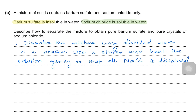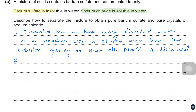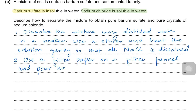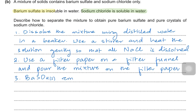During this time you will notice that barium sulfate is not going to dissolve because it's insoluble in water. So next, use a filter paper on a filter funnel and pour the mixture onto the filter paper. Barium sulfate is going to remain as a residue, while sodium chloride aqueous passes through as filtrate.